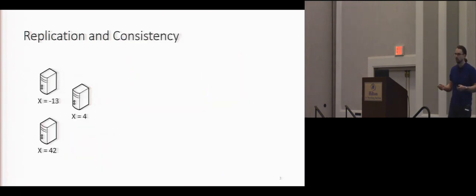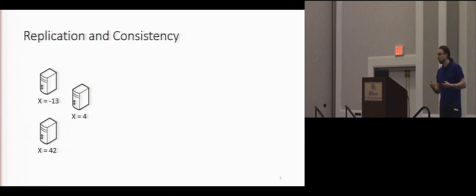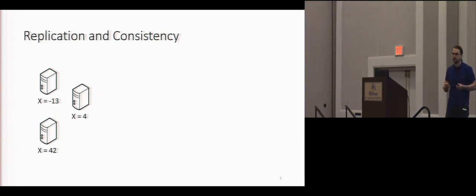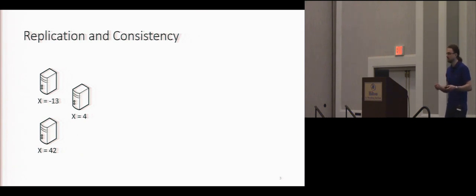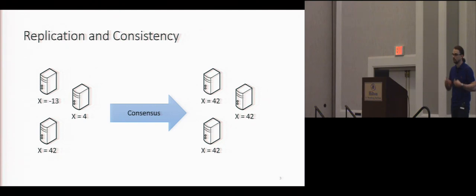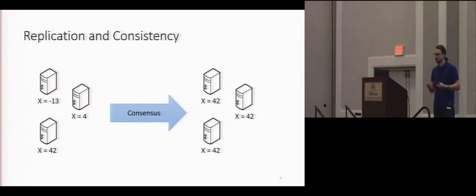But as we saw in the previous talks, when you introduce replication, that comes with its own set of challenges. The main one being consistency. Because if your system is stateful and each request of the client on the different replica can change the state of the system, if you don't pay attention, your system is going to become inconsistent. So one of the standard approaches, called state machine replication, is to use an algorithm called a consensus algorithm, in order to make sure that the system stays in a coherent state.